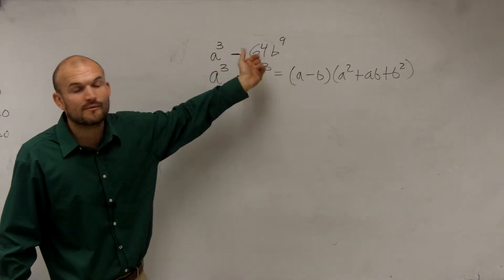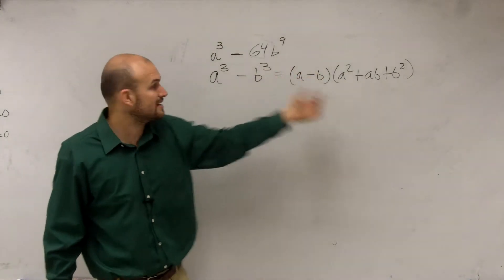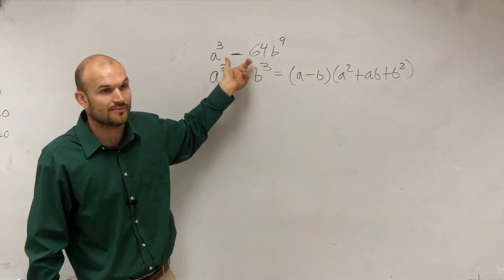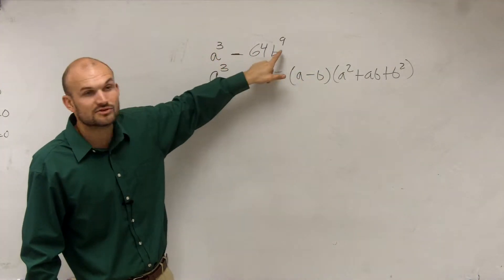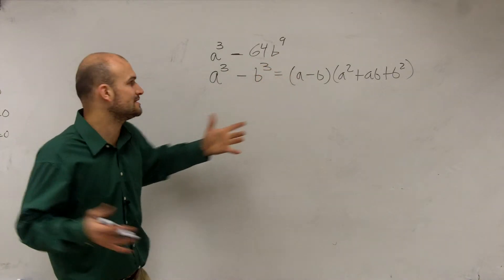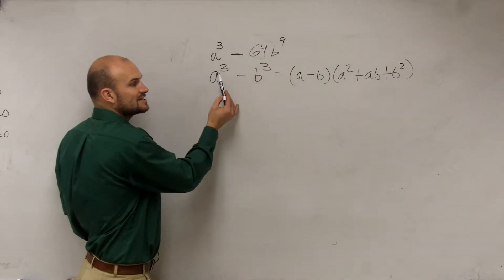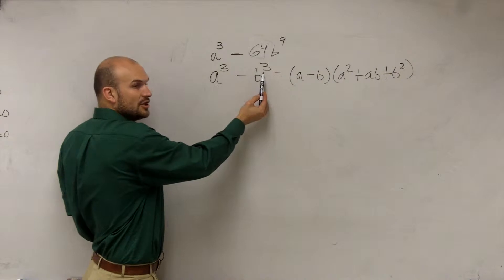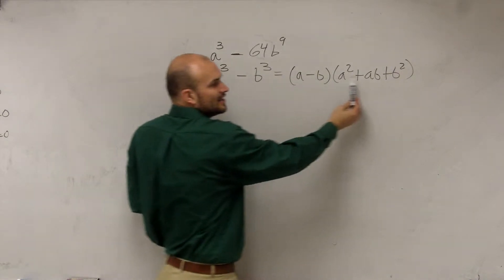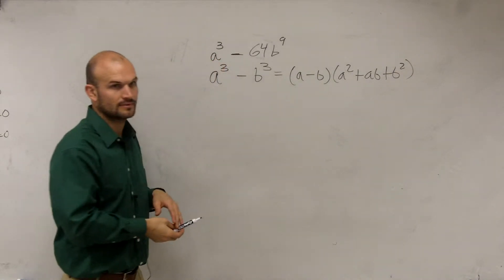The only other term we've learned when we have two terms is the difference of two squares. And this is not a difference of two squared numbers. This number is cubed, and this number is raised to the ninth. But what we want to do is see if we can write them as a cubed number minus another cubed number, then here is our factored form.